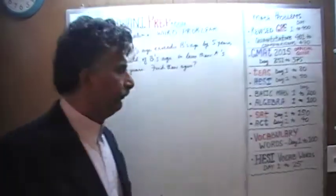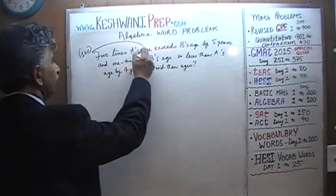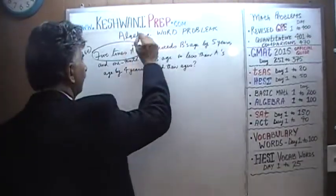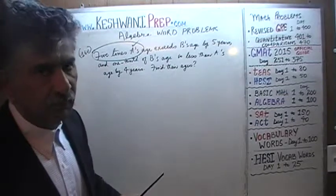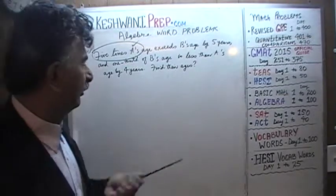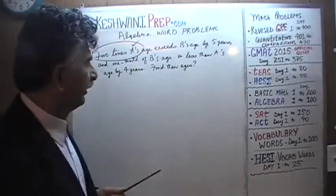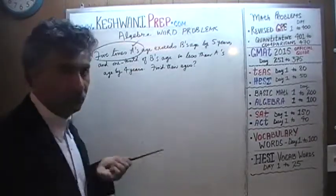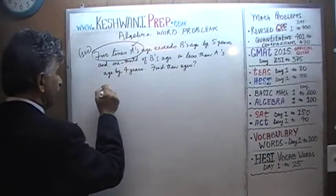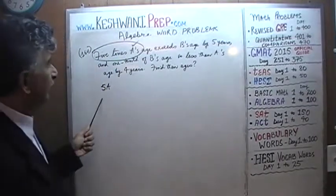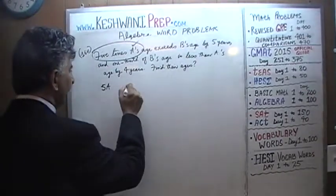Let's begin. 5 times A's age — now A, of course, is being used as a person's name, but we're also going to use the same variable to represent their ages, so don't get confused. A represents A's age. It's the same variable. So 5 times A exceeds B's age by 5 years.